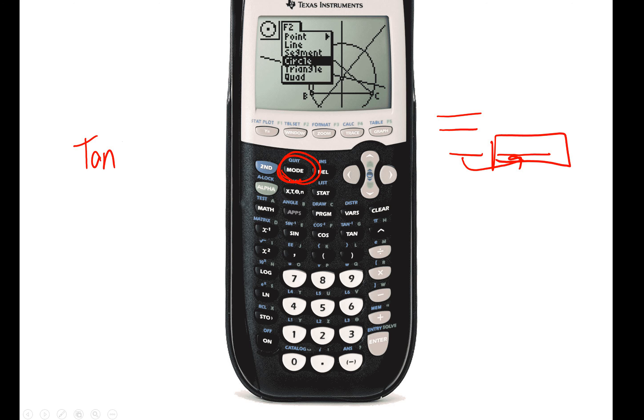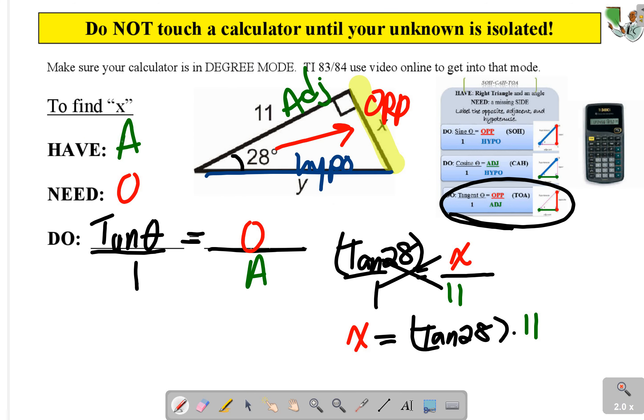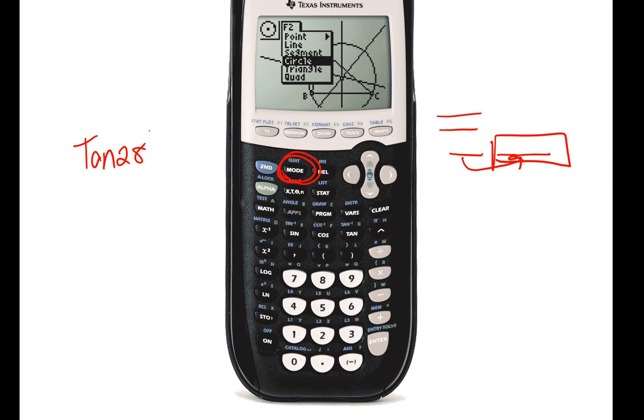Okay, so we're going to do tangent 28 times 11. On your calculators, you hit tangent. It's going to start a parentheses. You put 28. Close the parentheses. Hit the times button. Then do 11 and enter. And I'll tell you what you should get there.